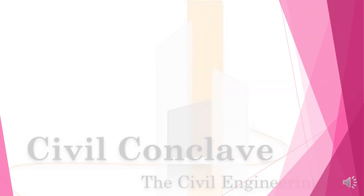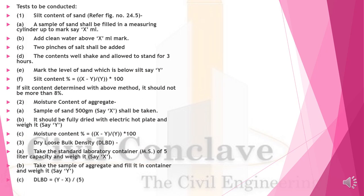Silt content test: Fill a measuring cylinder with a sample of sand up to mark X. Add clean water above the X mark and two pinches of salt. Shake and allow to stand for three hours. Mark the level of sand as Y. Silt content percentage = (X - Y) / Y × 100. Silt content should not be more than 8%.